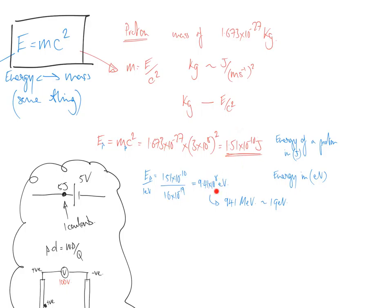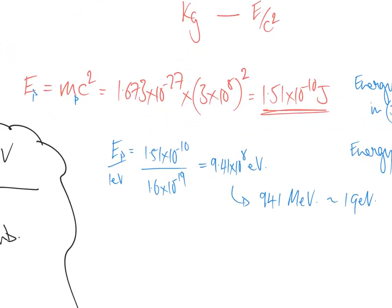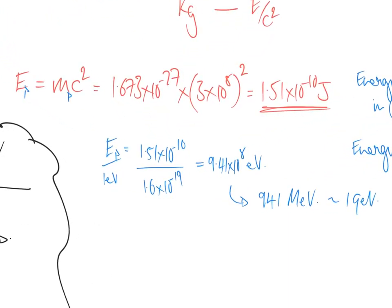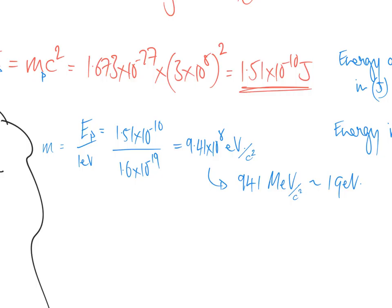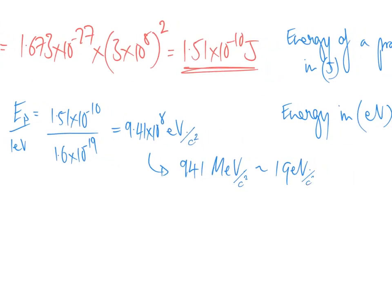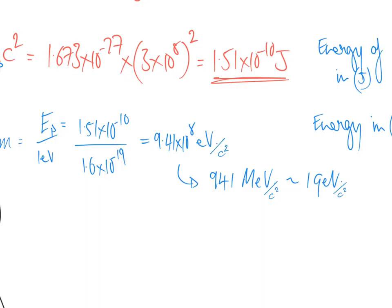And so, therefore, what we've done is we've worked out the mass of a proton in terms of the energy. And so, therefore, what I can say is that the mass of this is technically 941 mega electron volts per c squared. Because that gives me the mass. But what we do is physicists just are just a bit lazy. And they never really say that bit.